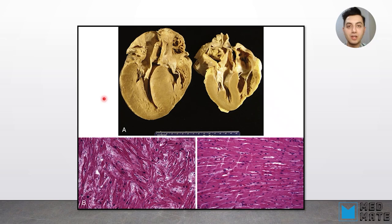An example of hypertrophy is seen in cardiomyocytes. In this slide, you can see on the left side the ventricle of this heart has undergone hypertrophy and is much thicker than the normal size seen on the right. And also on the slides, you can see how different the morphology of the tissue is.